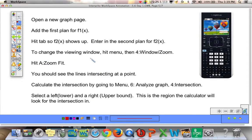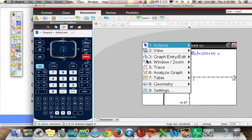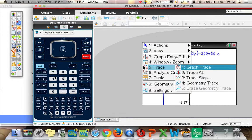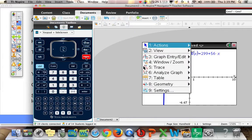To change the viewing window, we can hit menu. Remember, this is a menu-based calculator, so you can find most things under the menu. Windows zoom. So menu. Windows zoom is number four. So let's try that again. Menu. Windows zoom is four.